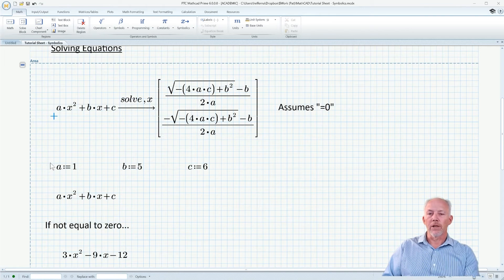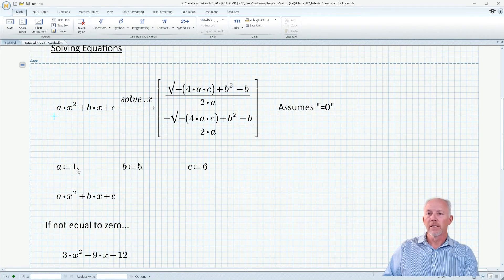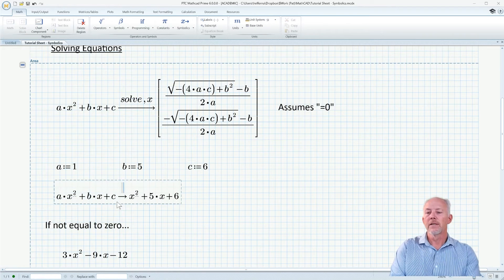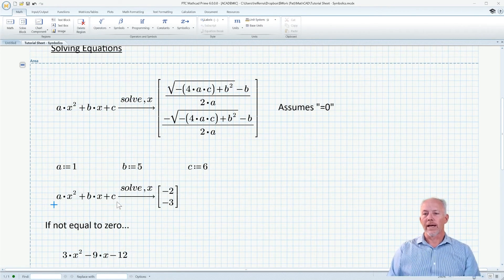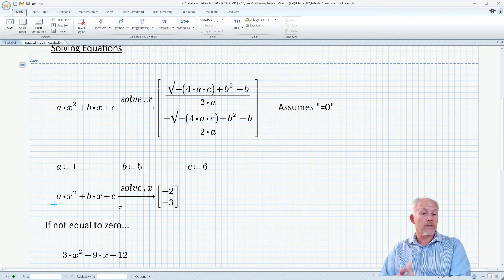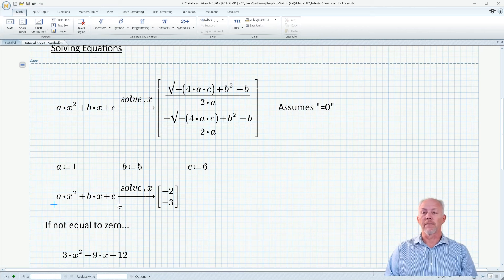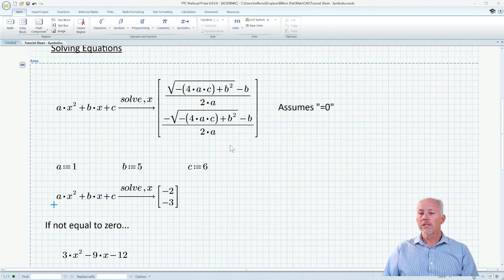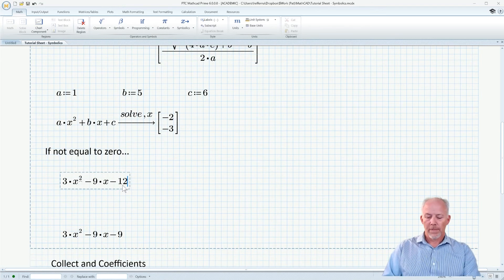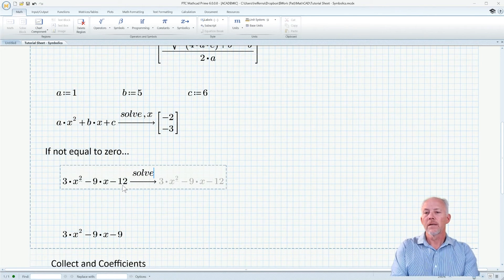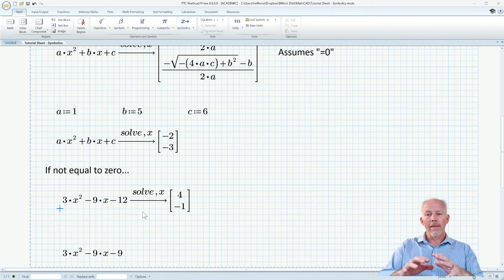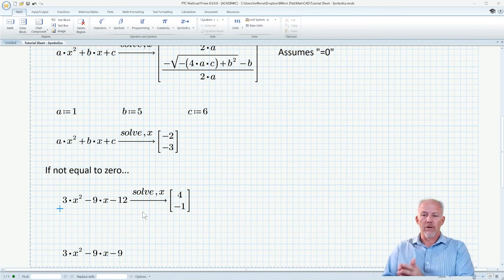Let's see how it varies. We're going to take our coefficients and give them numerical definitions: a equals 1, b equals 5, c equals 6. We're going to take our same expression, engage the symbolic solver, solve it for x. And lo and behold, it comes back with the numerical values. In this case, other than x, all of the values are defined, so it's going to come back with a numerical value. So how do we work around that assumption of it being equal to zero?